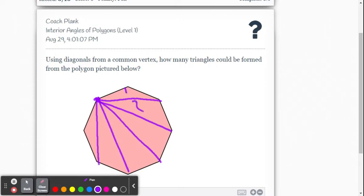It's an octagon. But there's one, two, three, four, five, six of these diagonal triangles.